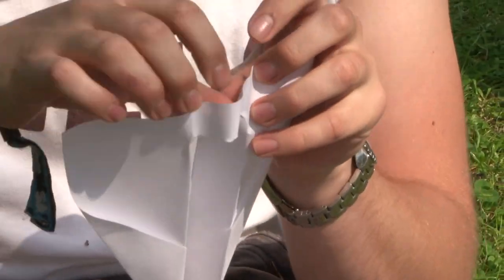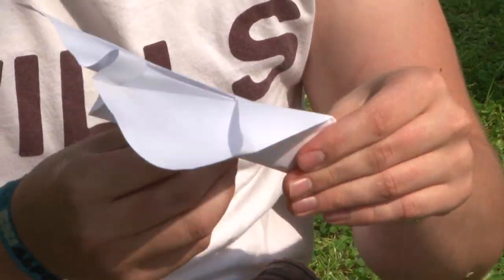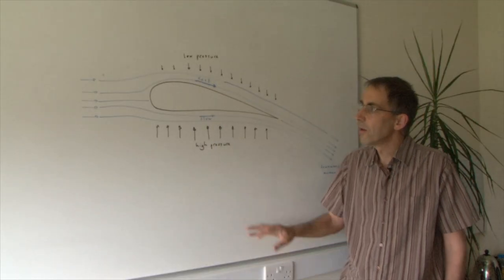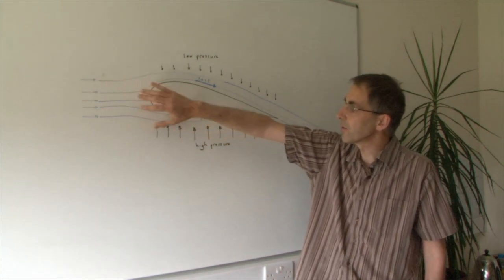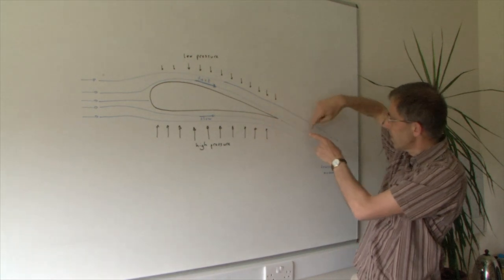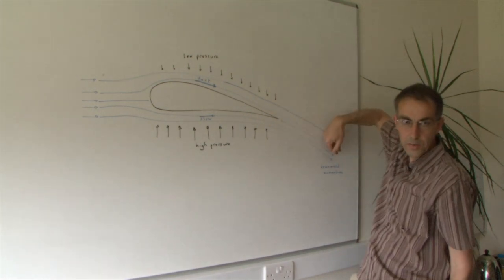So what I've done here is I've drawn a cross-section through an aeroplane wing, and the air rushes along like this and around both sides of the wing and then ends up moving downwards at the other end.